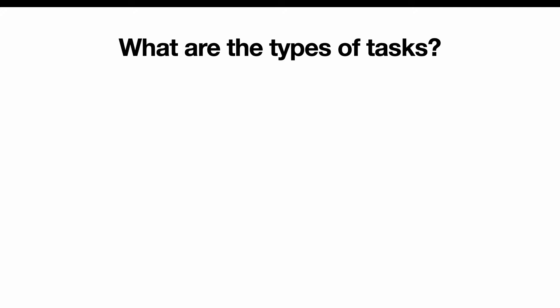Now since you know who creates them, you may be wondering: what are the types of tasks that can be created? There are roughly four that I'll cover. The main one is a user story — the most common and most often created. A user story can be almost anything: a feature expanding upon an existing feature, implementing a new design, something technical, or maybe even refactoring.